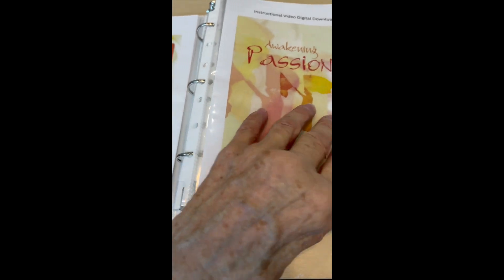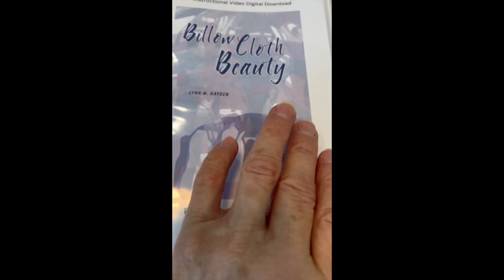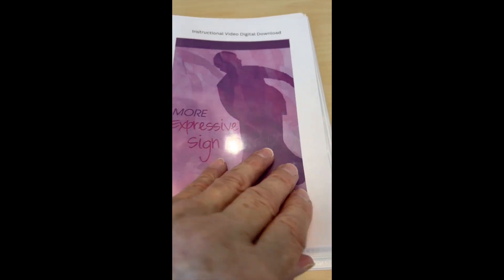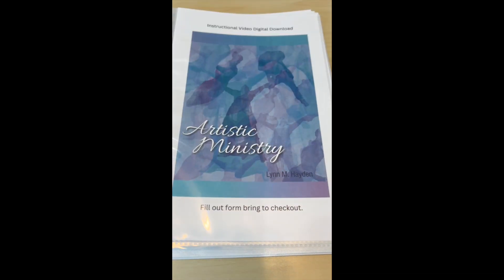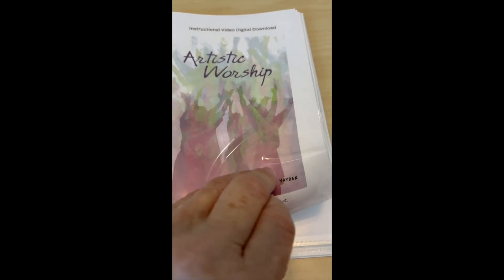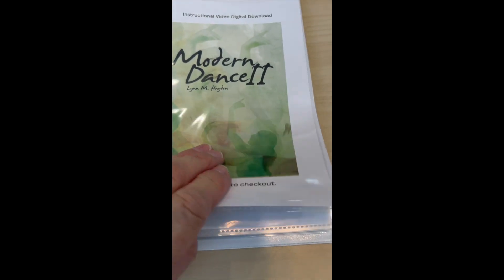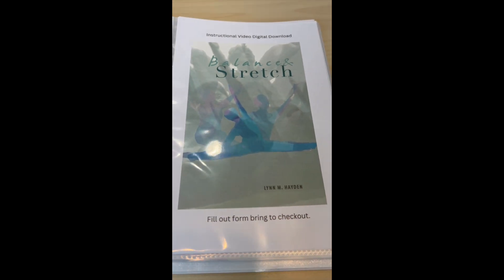I'll either leave them in the book or spread them out on the table in sections according to what they are — like expressive videos, things related to ministry, artistic ministry, artistic worship, prophetic dance, and then the fitness and dance ones, ballet and modern. I just want to have these out and available so you can see what's offered.